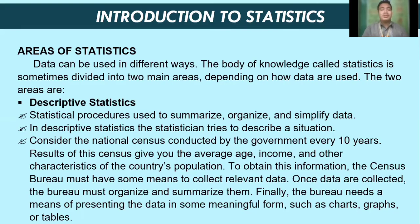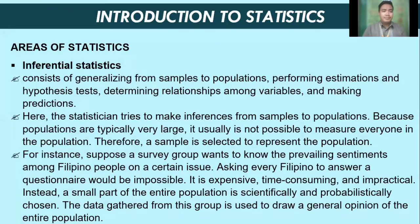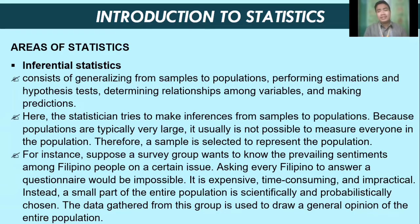The other area of statistics is called inferential statistics. It consists of generalizing from samples to populations, performing estimations and hypothesis tests, determining relationships among variables, and making predictions. Here the statistician tries to make inferences from samples to populations, because populations are typically very large and it is usually not possible to measure everyone.